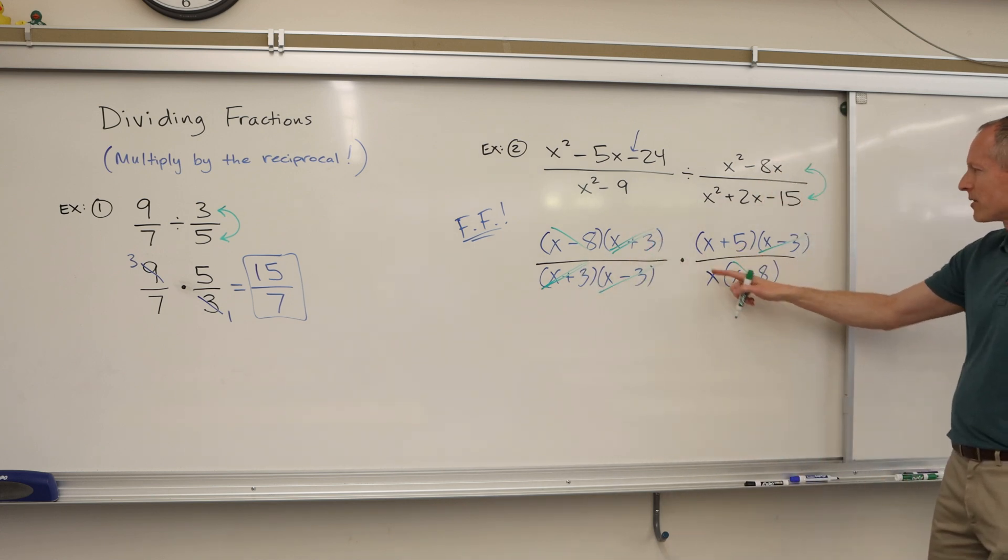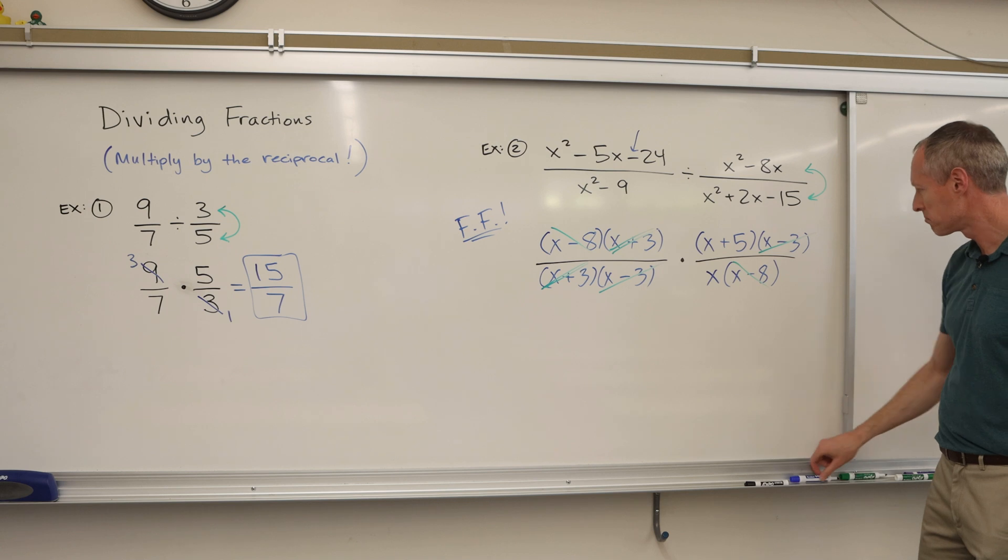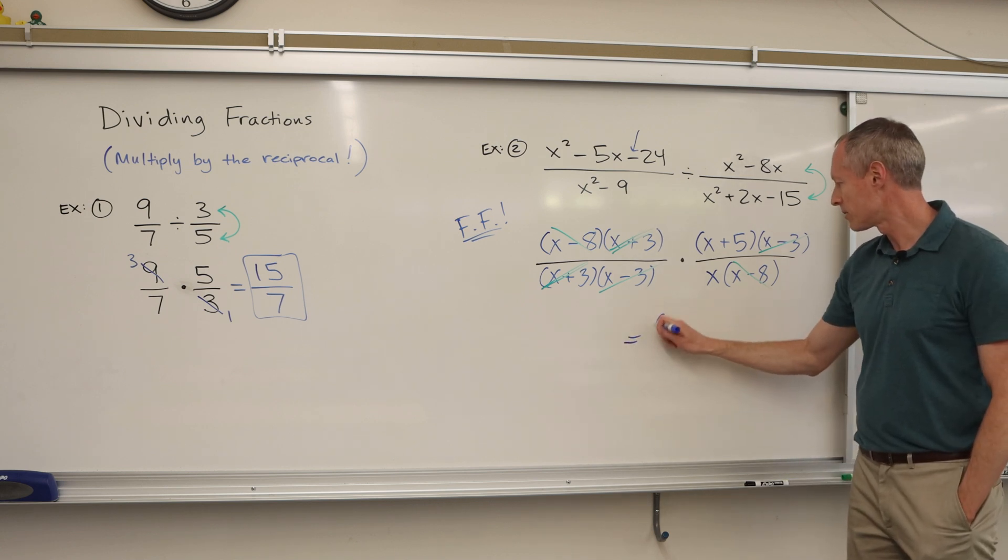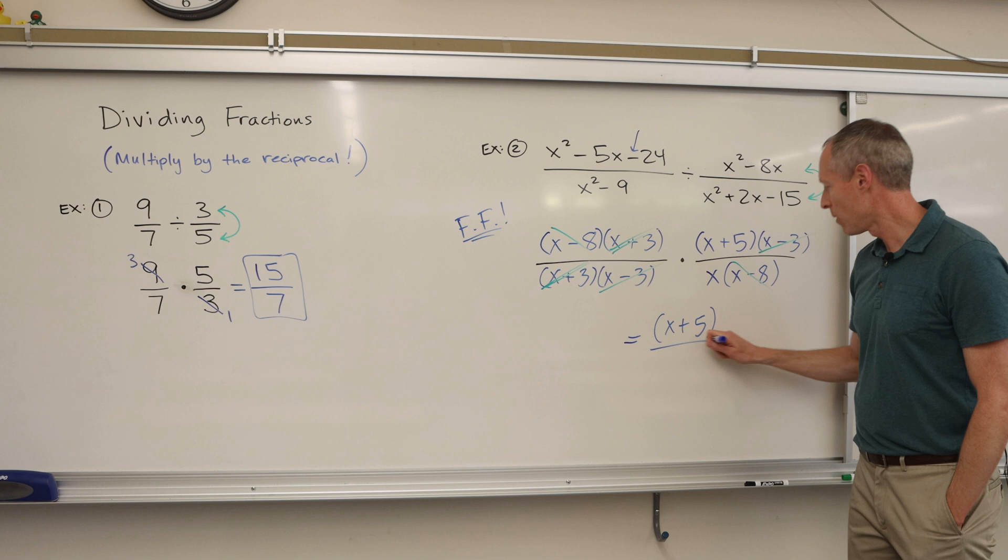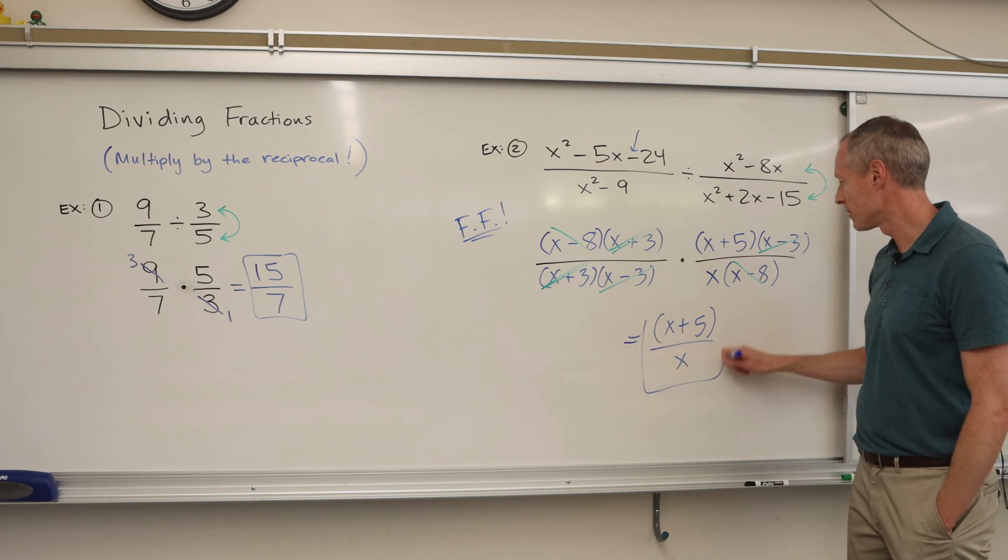And we're left with this and this. There's not another individual x on the top. So our answer is just going to be x plus 5 over x. And we are done.